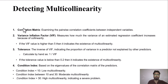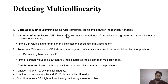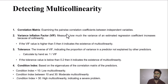The first method is the correlation matrix. You can also create a correlation matrix in Excel. Basically, the correlation matrix gives you the pairwise correlation between the independent variables. When you make a correlation matrix and the value is above 0.8, or 80%, it might be the case of severe multicollinearity.